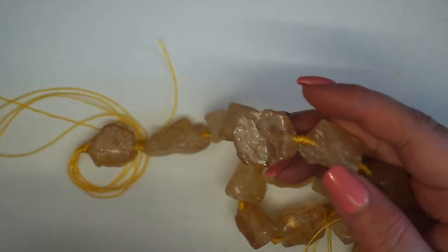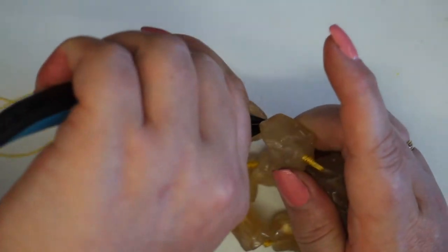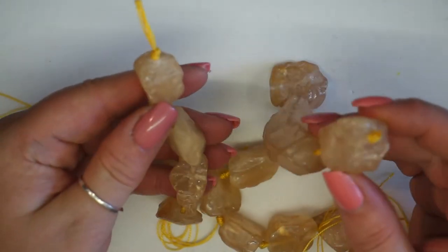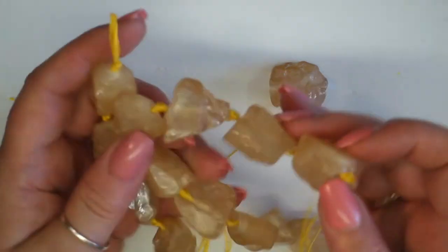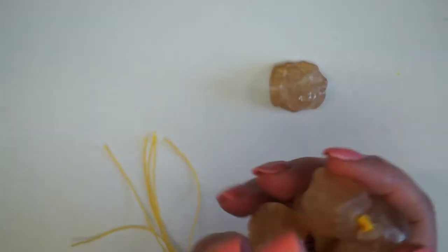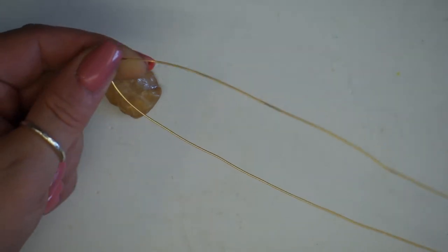So I'm going to take my flush cutters and I'm going to cut this. Now the beauty of this strand is that it is knotted, so you can remove your stone and then the rest will remain on the strand. I've gone ahead and cut a length of 0.8 gauge wire and I've taken about a meter and I'm folding it in half.